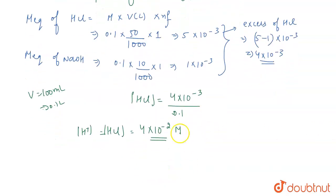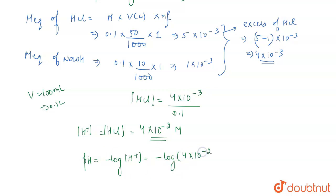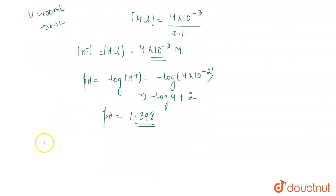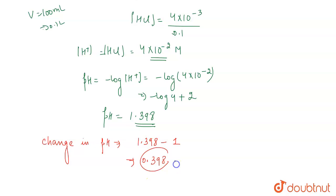Now that we have the concentration of H⁺, we can find the pH: pH = −log[H⁺] = −log(4 × 10⁻²) = −log 4 − log(10⁻²) = −log 4 + 2·log 10 = 2 − log 4 ≈ 1.398. Since the initial pH was 1, the change in pH = 1.398 − 1 = 0.398. This is the change in pH and the correct answer to the question.